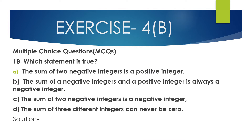Question 18, MCQ: Which statement is true? Option A: the sum of two negative integers is a positive integer. This is false, because when we add two negative integers, we add them without the sign and place the negative sign before the result. So the sum of two negative integers is always a negative integer.